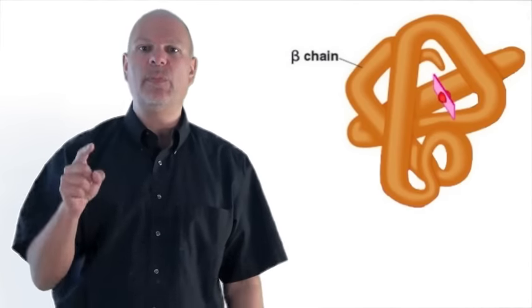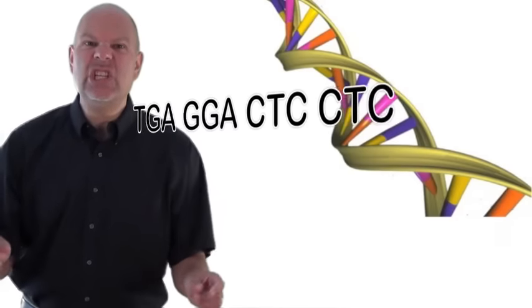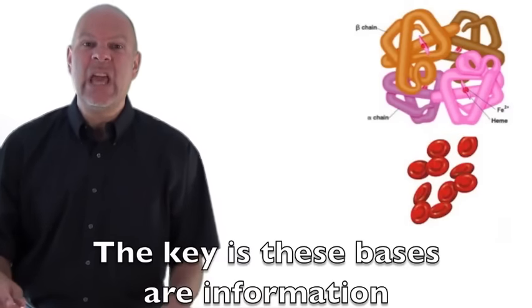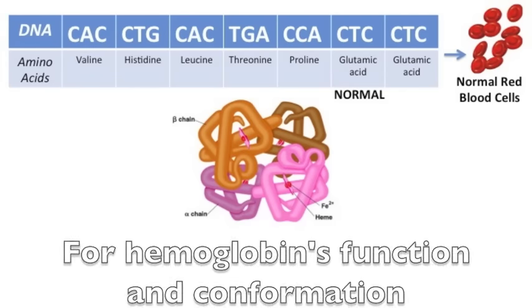Hundreds of bases spell what hemoglobin piece, hundreds of A's, G's, T's and C's. The gene starts C-A-C-G-T-G-C-A-C, then T-G-A-C-C-A-C-T-C-C-T-C. The key is these bases are information for hemoglobin's function and confirmation.